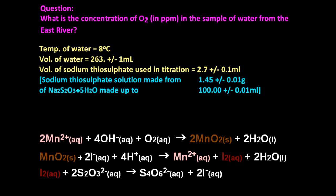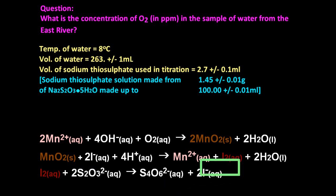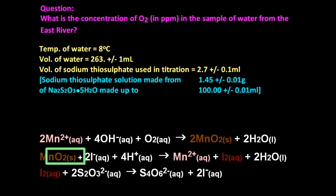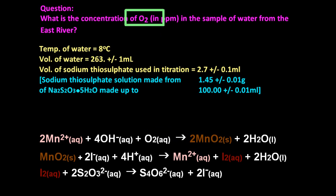Here's a question you could be asked, based on the data I collected from that experiment. Just to recap: if I know the moles of thiosulfate, I can work out the moles of iodine, then to manganese 4+ oxide, and finally to dissolved oxygen.